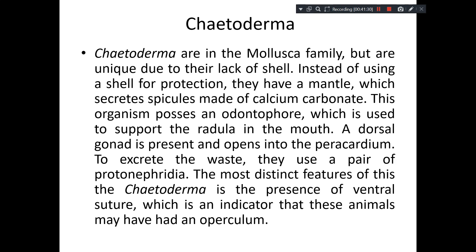Let us understand about one example — Chaetoderma. This is a marine mollusc family, unique from other molluscs because they lack a shell. Instead of a shell for protection, they have a mantle impregnated with calcareous material — no shell, but the mantle itself is impregnated with calcium material. Spicules made out of calcium carbonate are found in the mantle. These organisms also have a structure called the odontophore, which is a supporting structure for the radula in the mouth.